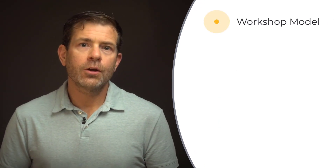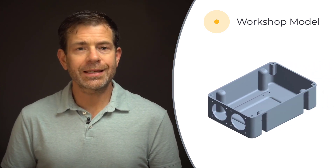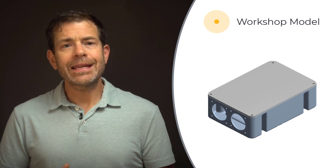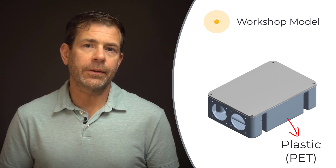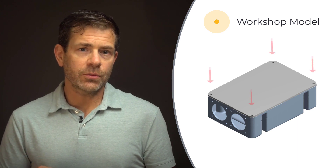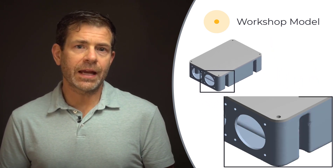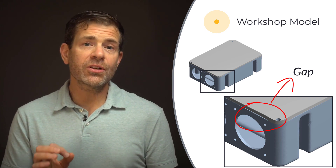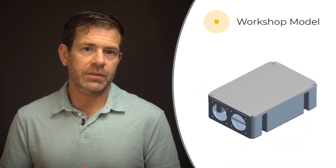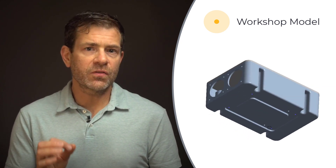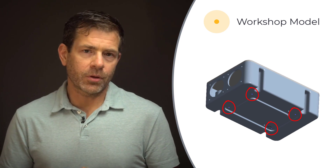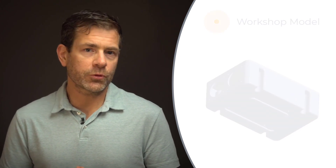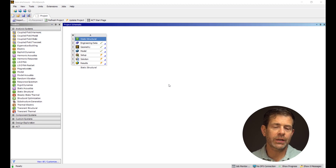Let's now look at our workshop model. For this workshop, we'll use a box enclosure used to house electronics as an example. This sort of box enclosure is prevalent in homes and in industry. In this case, it's composed of an insulating material such as plastic or PET. The lid of the housing box is fastened to it using four pre-loaded bolts at the corners. We'll see that pre-loading slightly deforms the lid and the box causing slight gaps to form between them. This in turn affects how the contact will behave in the linear dynamic modal analysis. The bottom of the housing box is fixed at the four locations.